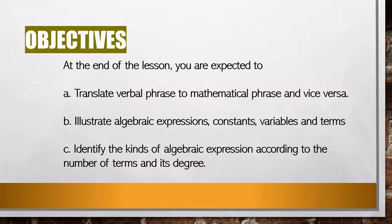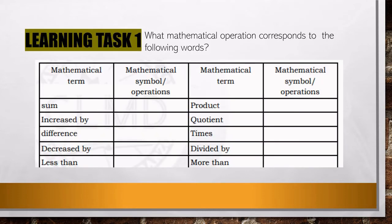For our objectives today, at the end of the lesson you are expected to: (A) translate verbal phrases to mathematical phrases or vice versa, (B) illustrate algebraic expressions — constants, variables, and terms, and (C) identify the kinds of algebraic expressions according to the number of terms and its degree.